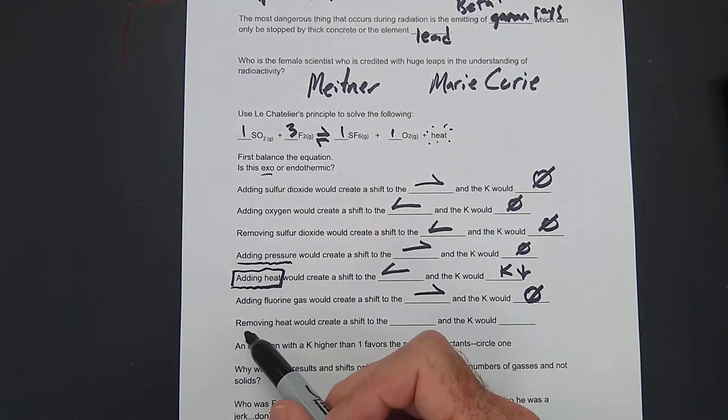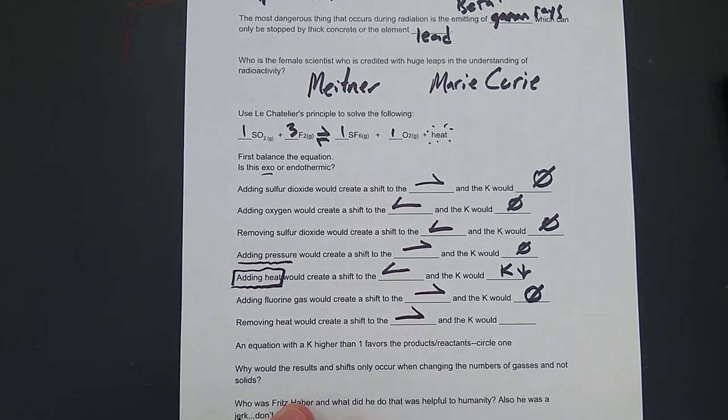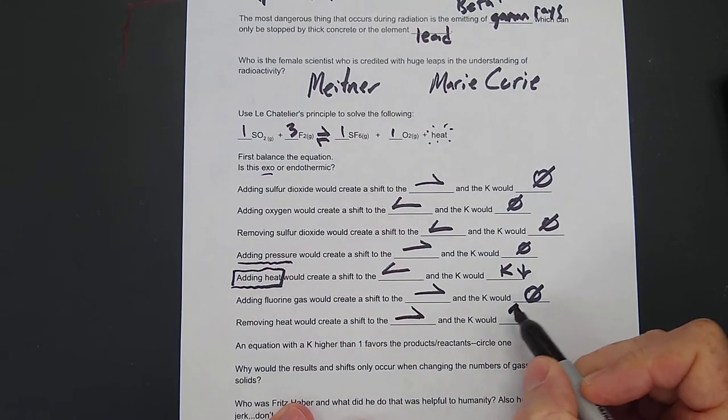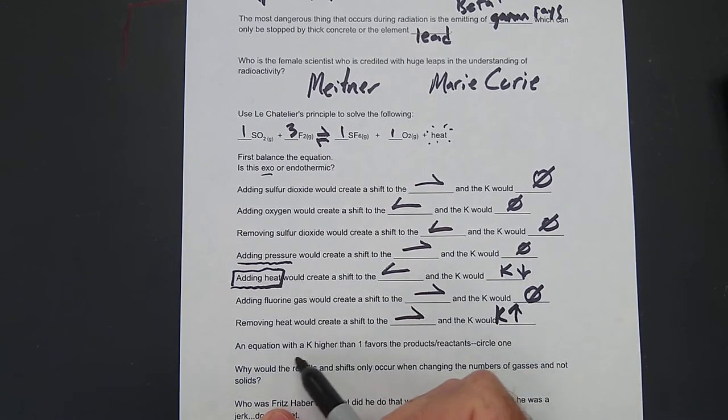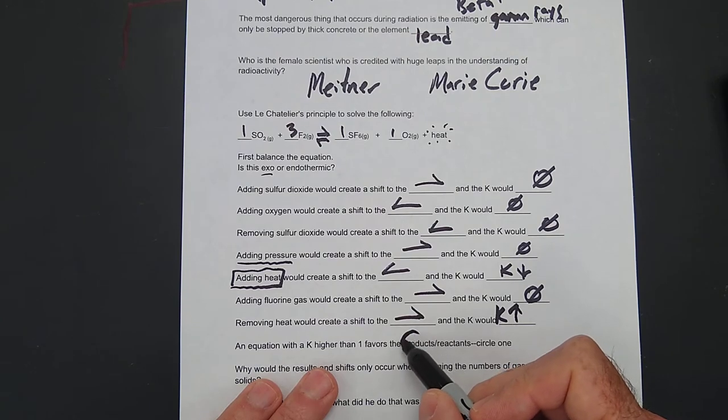Removing heat would create a shift. This is exothermic. So if we removed heat, it would be able to go better. Shift to the right, and the K would go up. The K would go up.